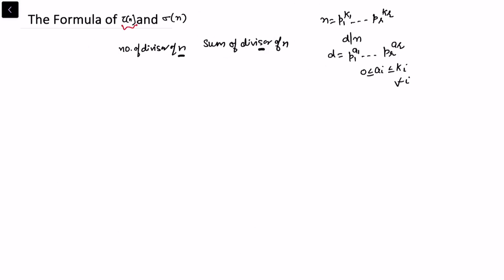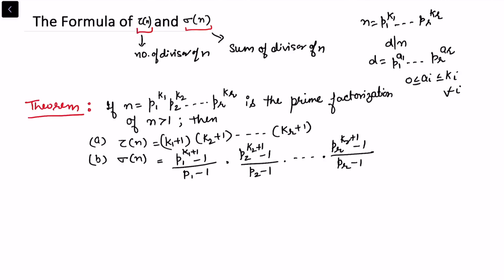Now we are ready to find the formulas for tau(n) and sigma(n). We know whenever n = p1^k1 × ... × pr^kr and d|n, then d also takes the same prime factorization form. The theorem states: tau(n) = (k1+1)(k2+1)···(kr+1), and sigma(n) = [(p1^(k1+1)−1)/(p1−1)] × ... × [(pr^(kr+1)−1)/(pr−1)].